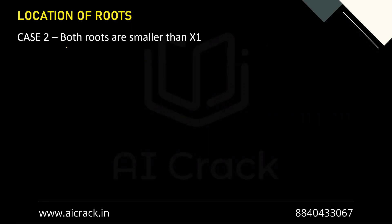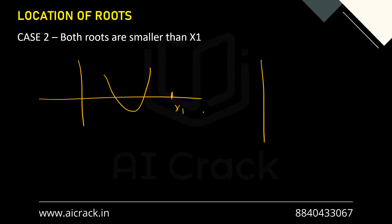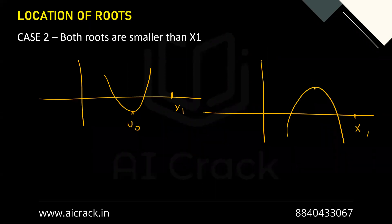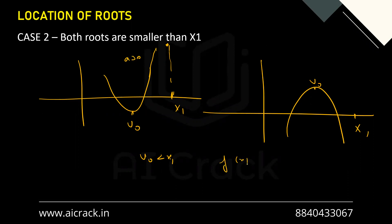Case two — both roots smaller than x1 — is exactly the opposite of case one. The vertex V₀ < x1 in both parabola orientations. The conditions are: D ≥ 0, vertex (i.e., -b/2a) < x1, and a·f(x1) > 0. This ensures both roots lie to the left of x1.